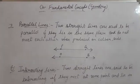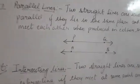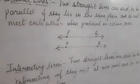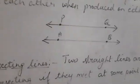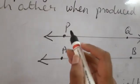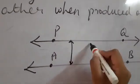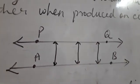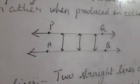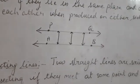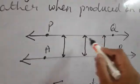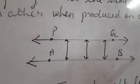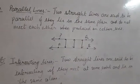The distance between these two lines at every point is the same — only then will they appear as parallel lines. If this distance is the same at every point, they will not meet each other at any point, and so they are known as parallel lines.